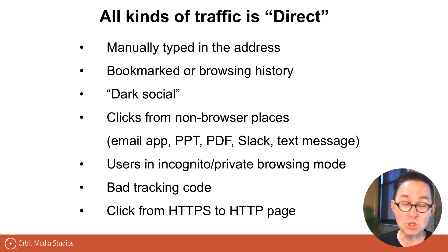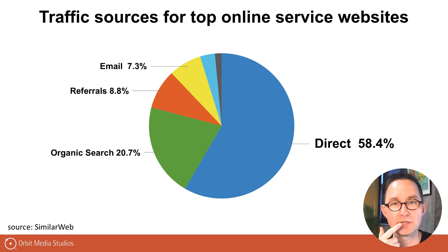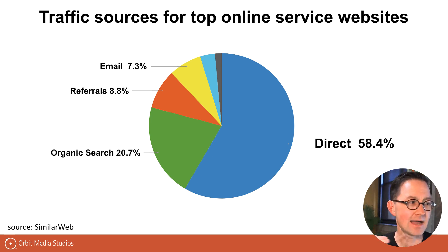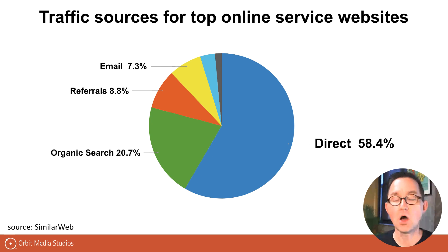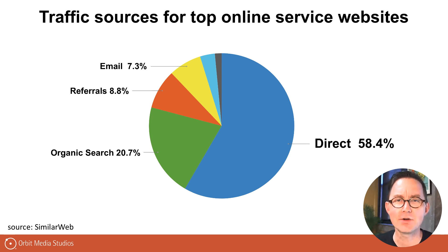It is a huge category of traffic. I asked my friends at SimilarWeb to pull a report showing the top sources of traffic to top online service websites — things like ExactTarget, HubSpot, GetResponse, SEMrush, and UserTesting. All of these sites have most of their traffic as direct. Why? They're big brands. But also, it's just unknown — it's the everything-else bucket, and it's the least accurate of all of those traffic sources.